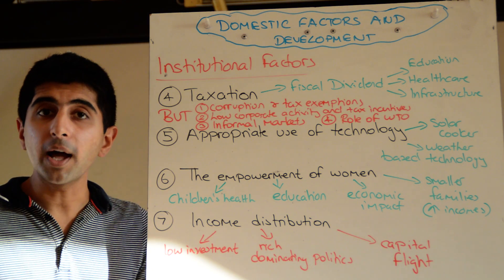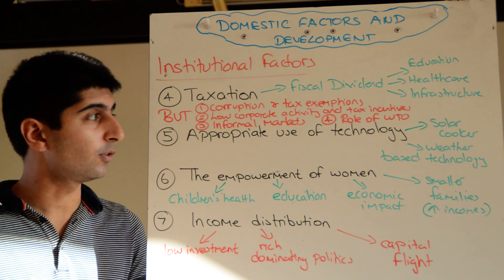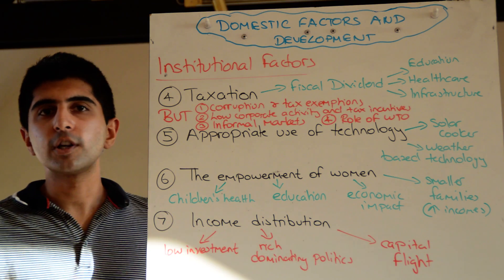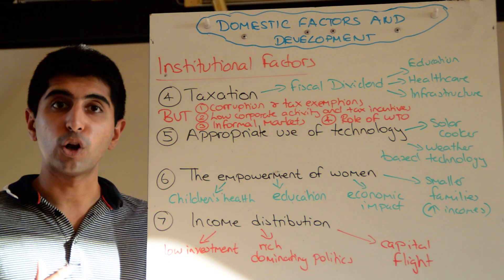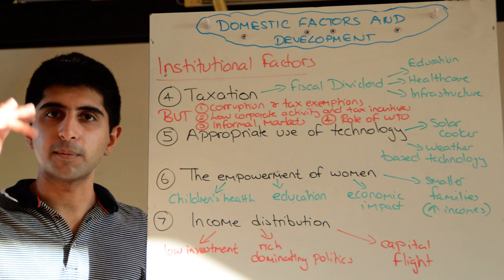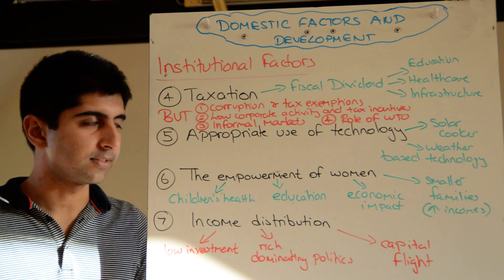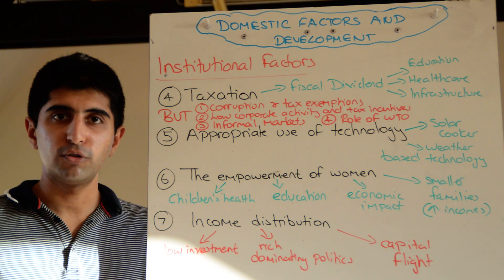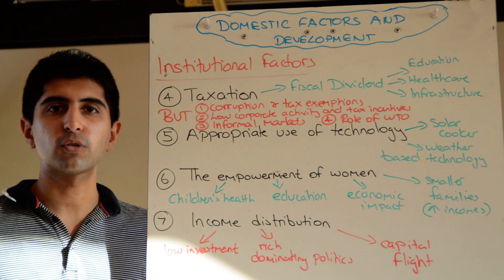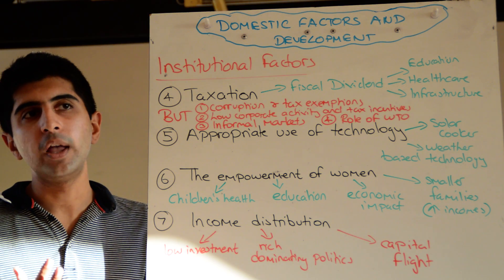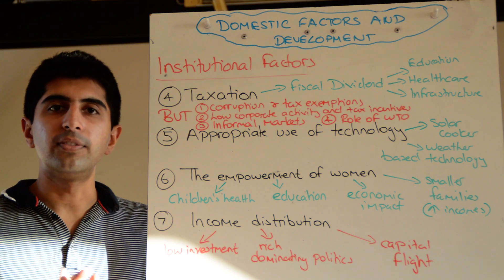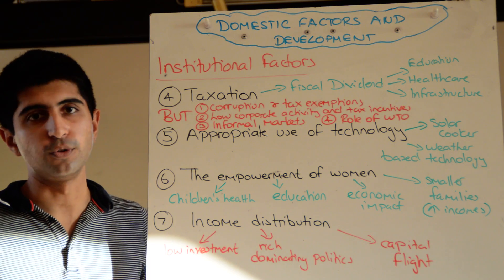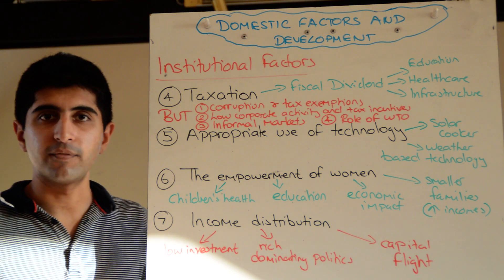There are lots of informal markets in developing countries, which means tax collection will be limited and not at its full potential. And because of the ever-increasing role of the World Trade Organization in the globalized world, tariffs have been falling over the last 10 to 20 years. Tariffs are a very easy way of collecting revenue and a major source of tax revenue for developing countries, but with the WTO's more influential role, the potential of tariff collection has been reduced, which again acts as a barrier.